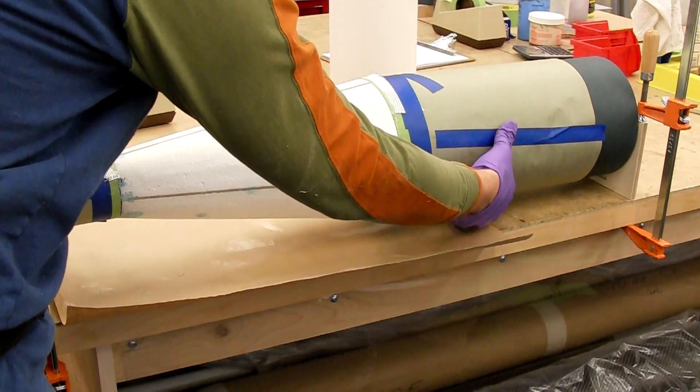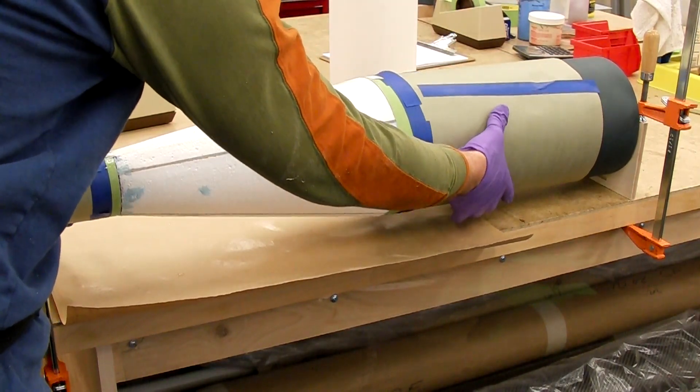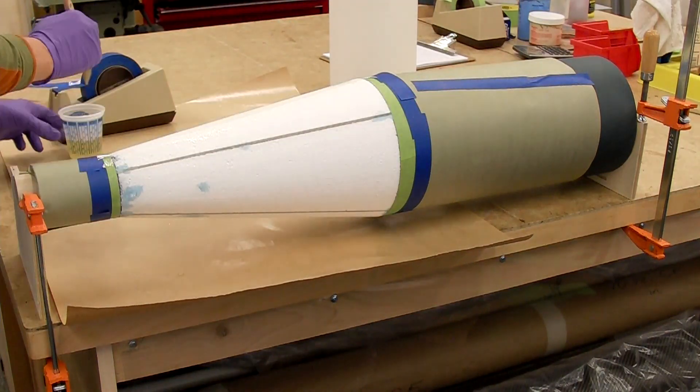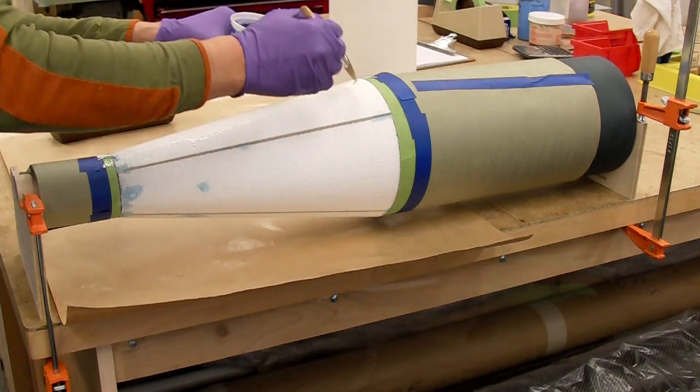Then rotate the tube a quarter turn, and we'll apply the second piece. This is just the same as the first piece, except it's overlapping by a quarter.